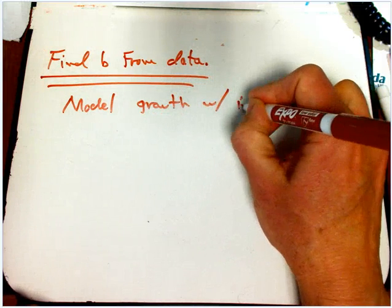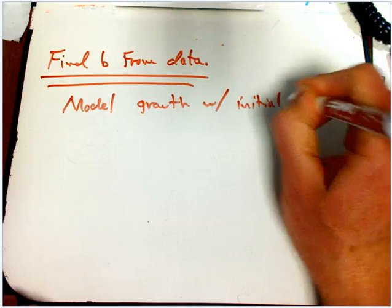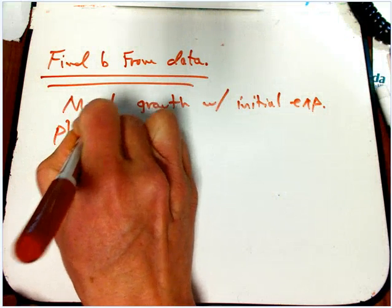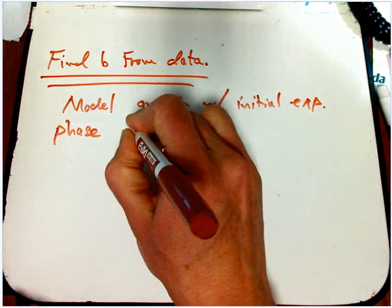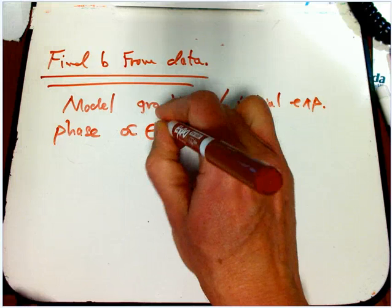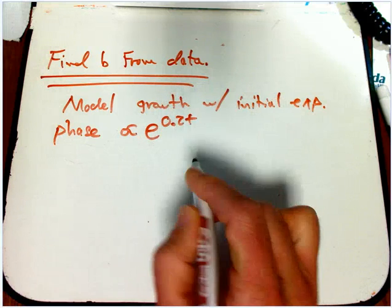What we want to do is we want to model growth with an initial exponential phase that's proportional to, remember this symbol means proportional to, e to the 0.2t.